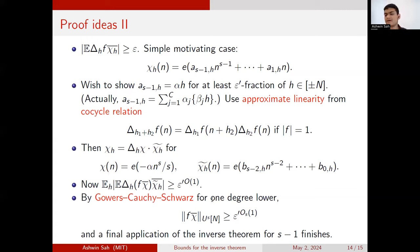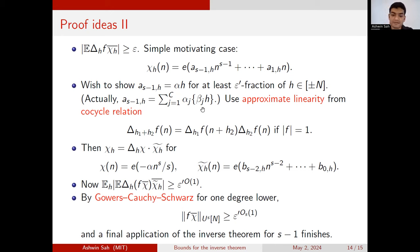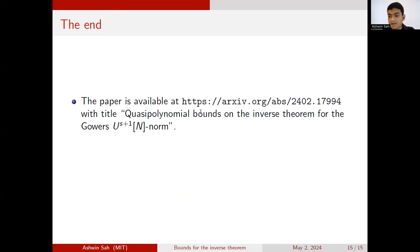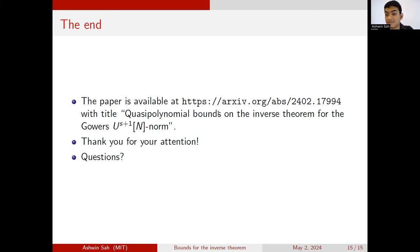As you can see, it's really intimately connected with proofs of Weyl's inequality, equidistribution, and this iterative integration. We see this cocycle structure appear, and there are many intimate relations to algebraic arguments in the ergodic theory picture as well. If you want, you can find the paper online: quasi-polynomial bounds on the inverse theorem for the Gowers U^{s+1}[N] norm. Thanks for coming, and if there are any further questions, I'm happy to take them.